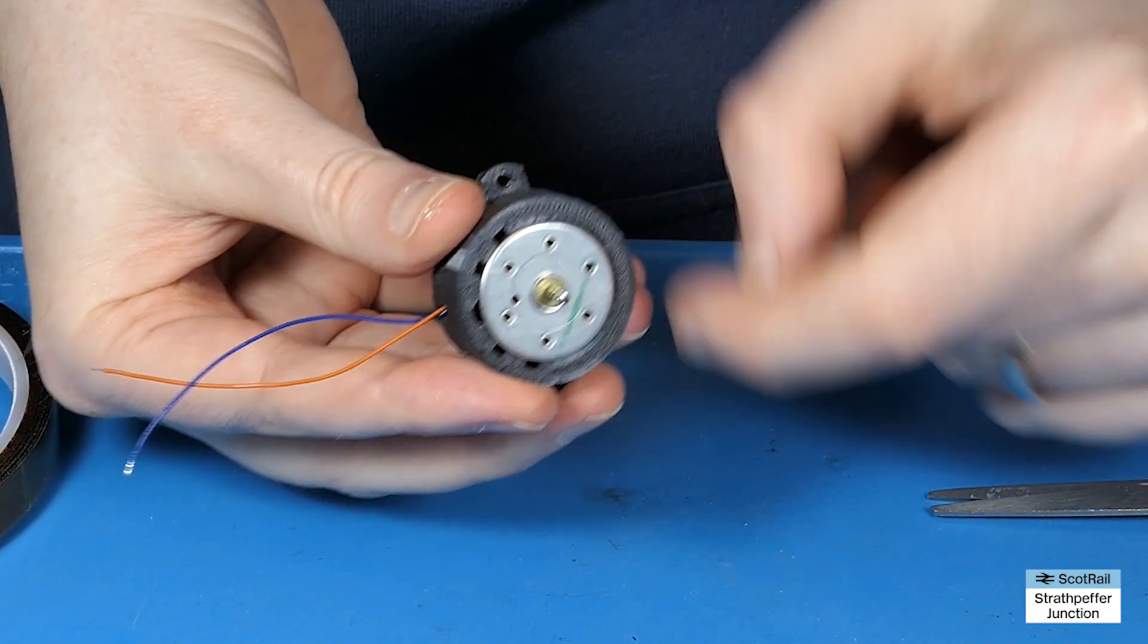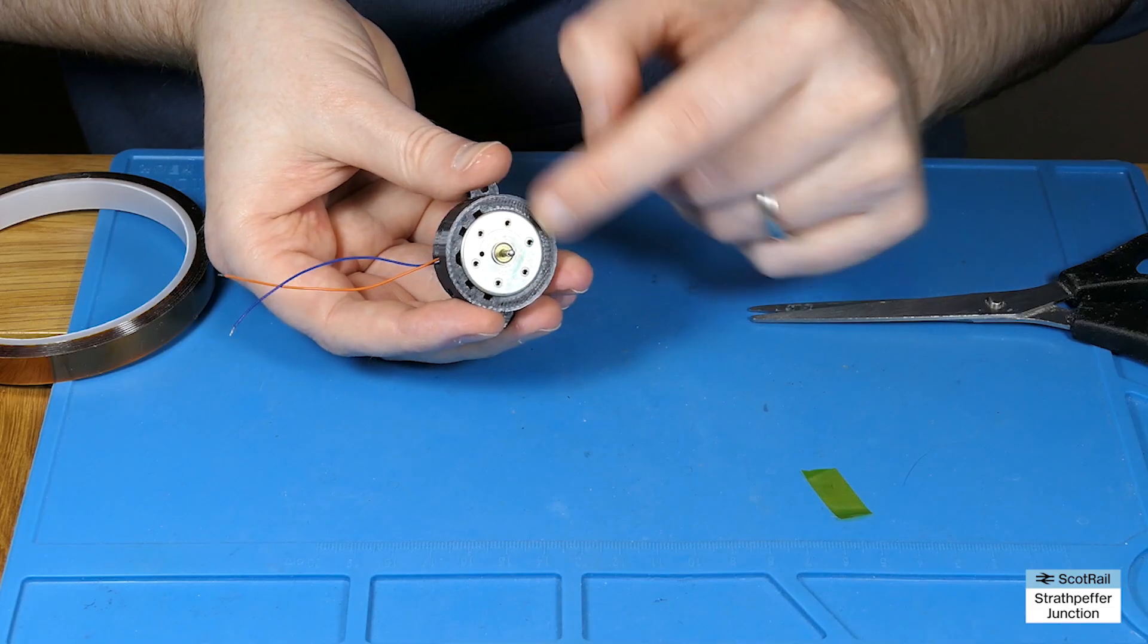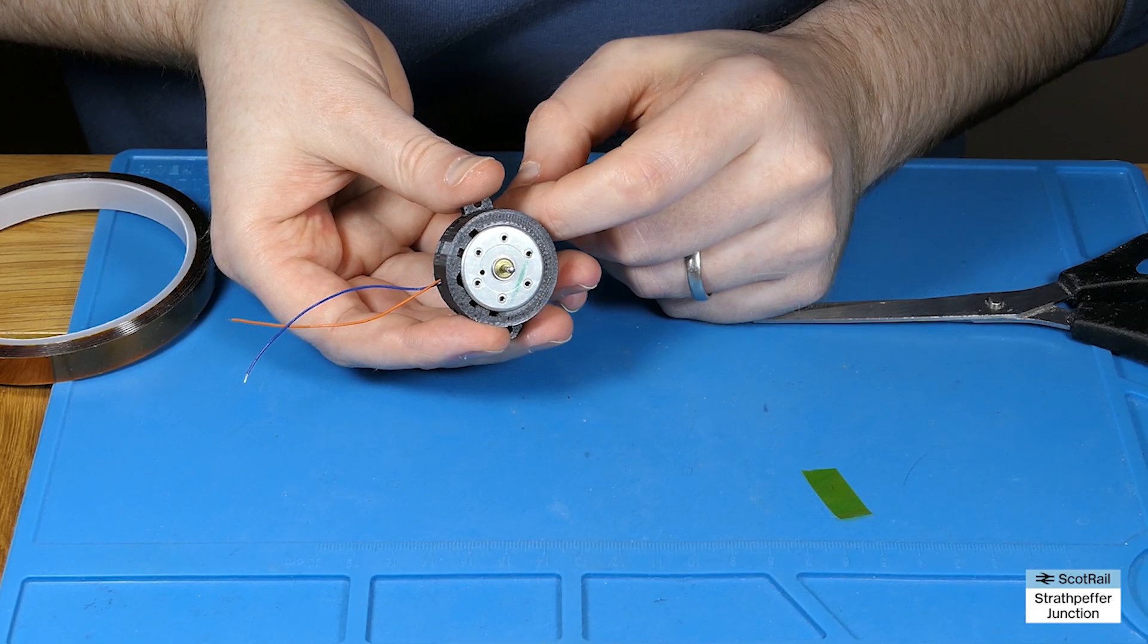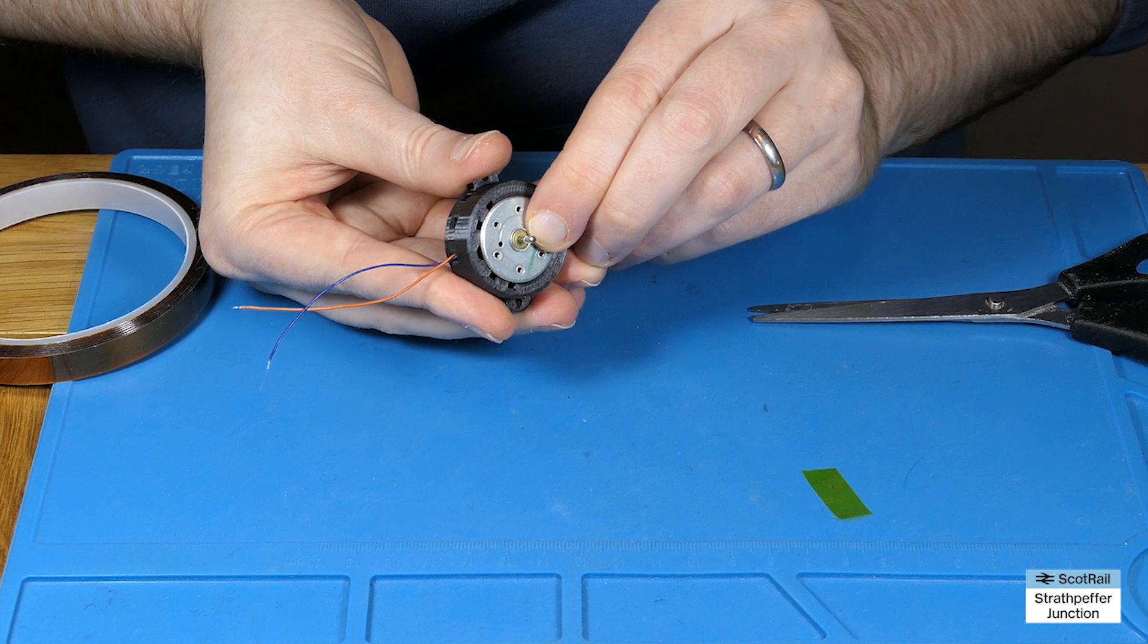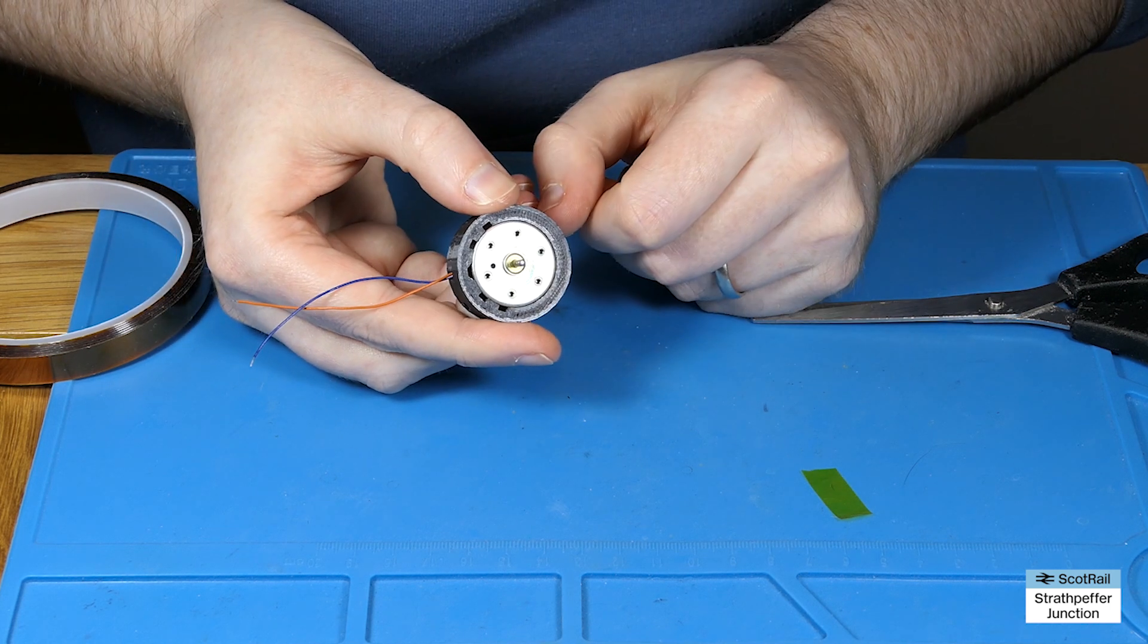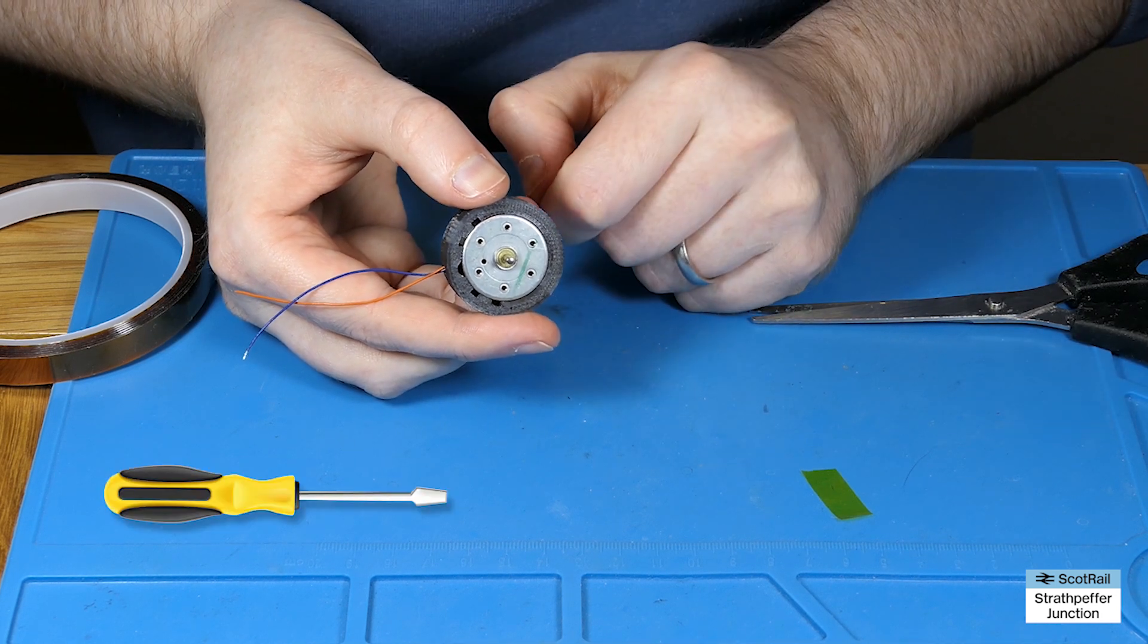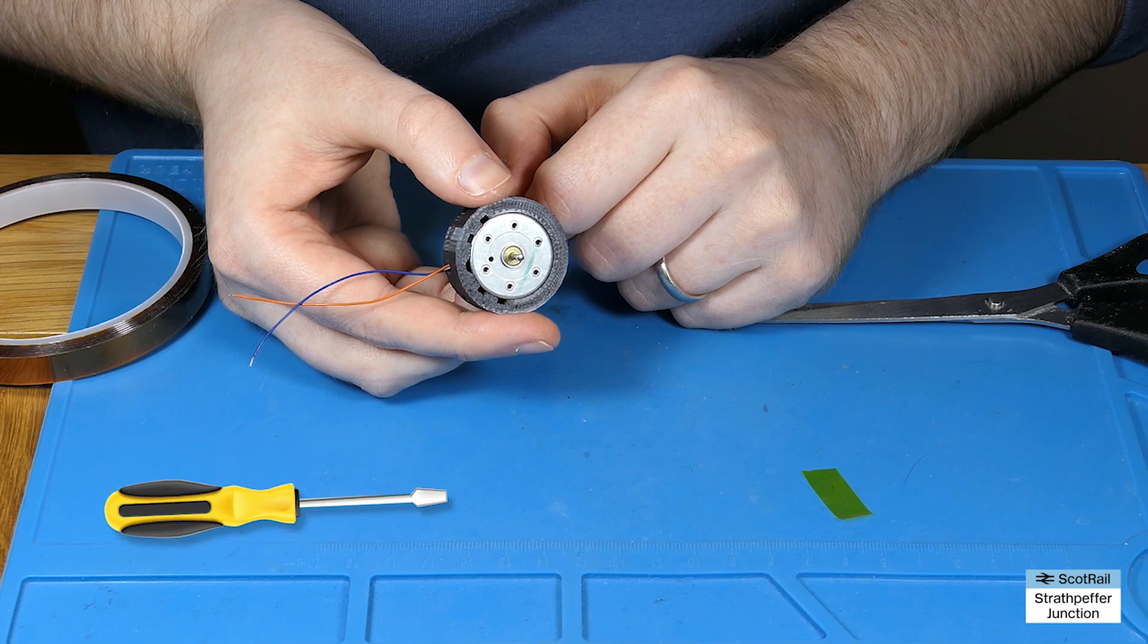But if it is a bit loose anyway, just pop it out again, and then pop another wrap of Kapton tape, and then pop it back in again. So build it up or subtract with Kapton tape. And that is the ideal way of getting these nice and securely into these adapters, but still so you can pop them out in future using a screwdriver potentially, if you ever needed to replace the motor.